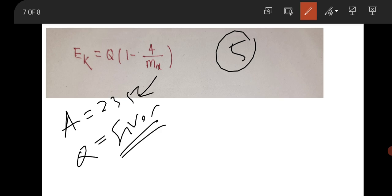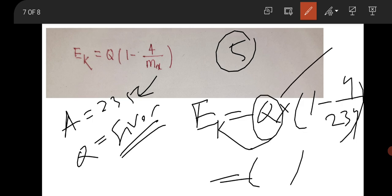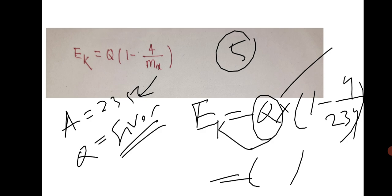You have to just substitute this value of Q and mx (that is A) and you can directly find the kinetic energy of the alpha particle: Q times (1 - 4/234). Q was given, so the value was coming as matching with the option. No further discussion on this question.